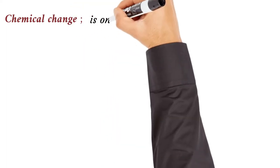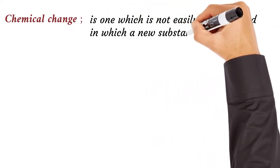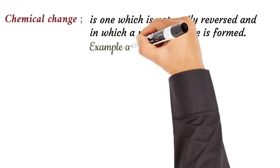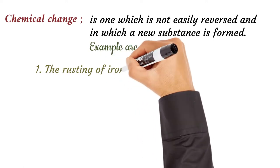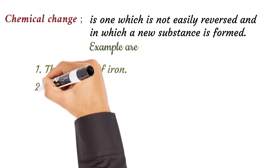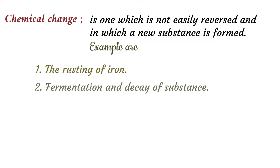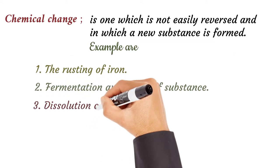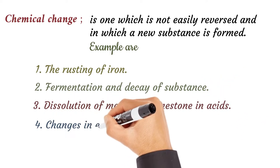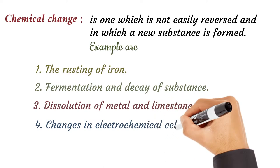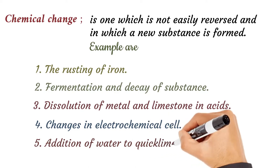Chemical change is one which is not easily reversed and in which a new substance is formed. Examples are the rusting of iron, fermentation and decay of substances, dissolution of metal or limestone in an acid, changes in electrochemical cells, and addition of water to quicklime.